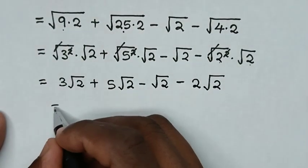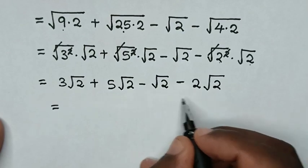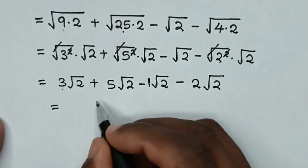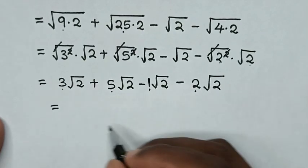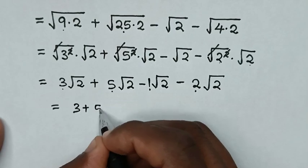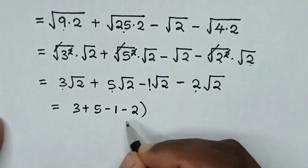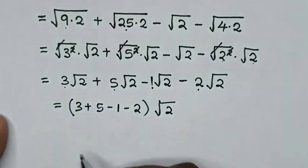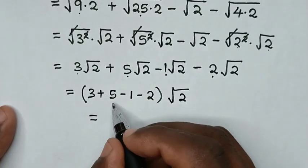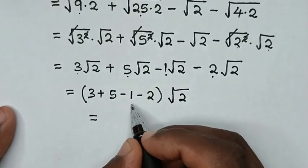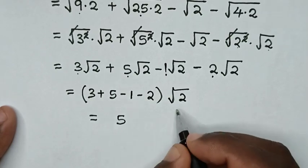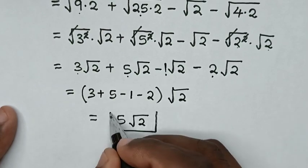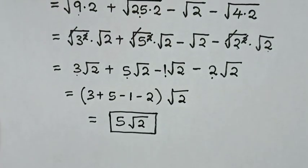Then in the next step, square root of 2 is common, so the expression becomes: (3 plus 5 minus 1 minus 2) times square root of 2. Then: 3 plus 5 is 8, 8 minus 1 is 7, 7 minus 2 is 5. So the final answer is 5 square root of 2.